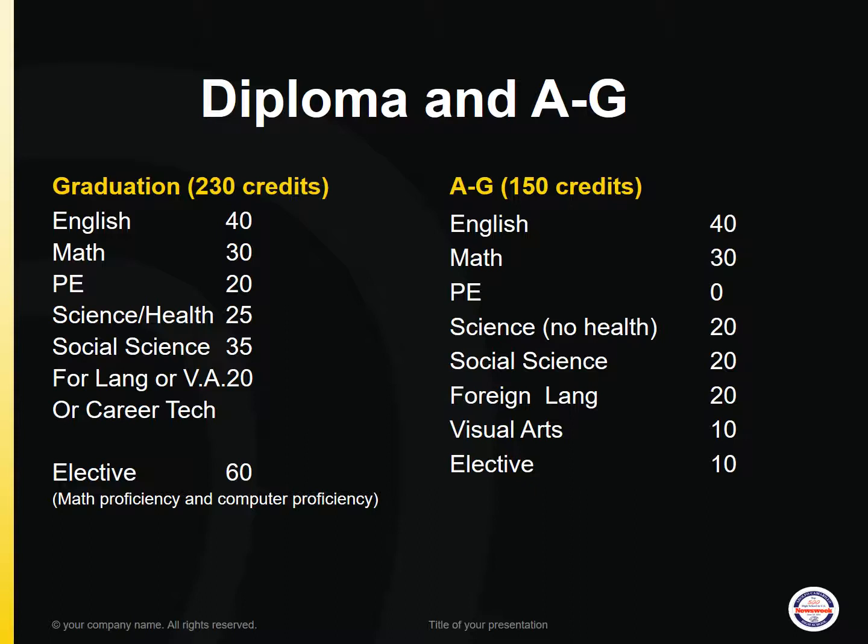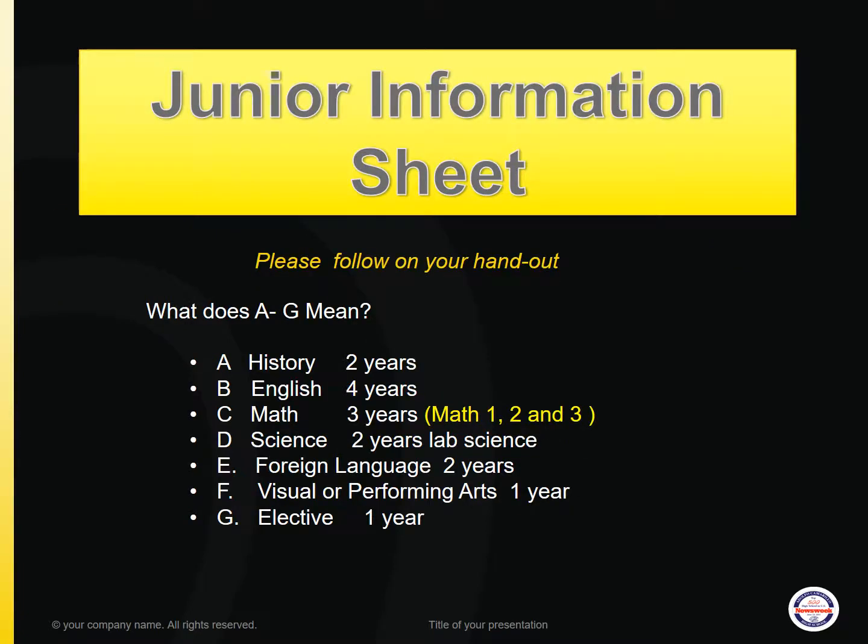The second column reviews the A through G requirements, which are the requirements needed to apply to a four-year university right after high school. They are similar to the graduation requirements with a few exceptions. In math, you must get through Math 3. For world language, you must have 20 credits or two years of the same world language. You must also take a year of visual and performing arts, and you must obtain a C or better. The A through G requirements are those needed to be eligible for UCs, Cal States, and most four-year universities.